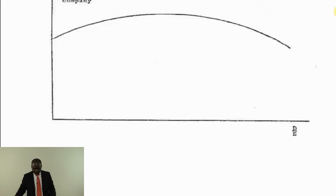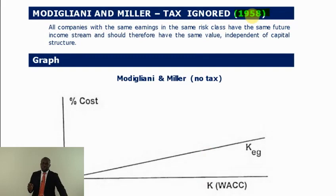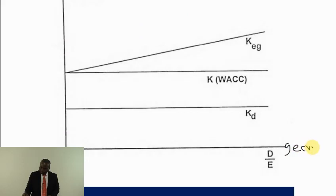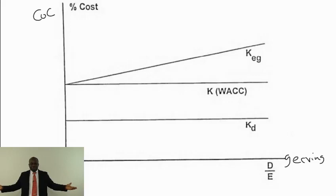The next theory is Modigliani and Miller, who introduced their capital structure theory in 1958 with many assumptions including no tax. Their argument: when gearing is zero the company is ungeared and faces only business risk. Equity holders demand a return for only business risk, and at that point WACC equals cost of equity — same as the traditional theory. When you raise money by cheaper debt, you make savings but introduce financial risk, causing equity holders to demand extra return.